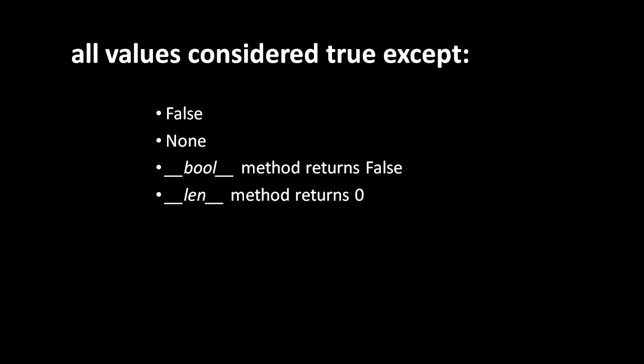If an object has no __bool__ method and only has a __len__ method, then the __len__ method is invoked. If it returns zero, that signifies that the object has a truth value of false. Any other returned value signifies a truth value of true.